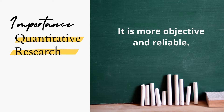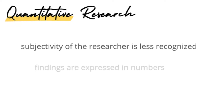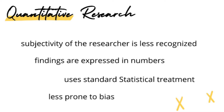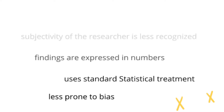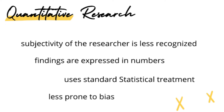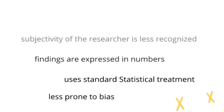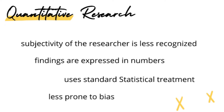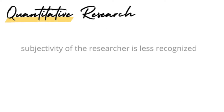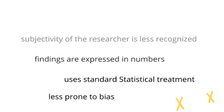The second importance of quantitative research is that it is more objective and reliable. It implies that the subjectivity of the researcher is less recognized, because the information gathered and the findings are expressed in numbers. Also, it uses standard statistical treatment, compared to qualitative research which uses interpretations and categorizations based on the researcher's perspectives and point of view, which is more prone to bias. Because of this, quantitative research is the preferred type of research among many organizations and institutions worldwide, especially for scientific and academic journals and publications.